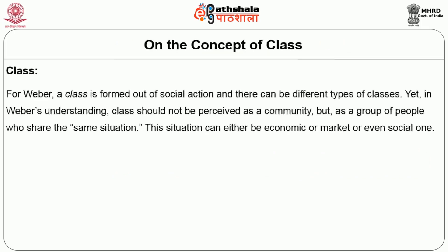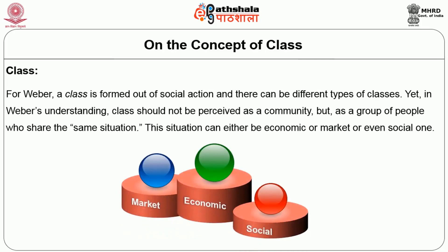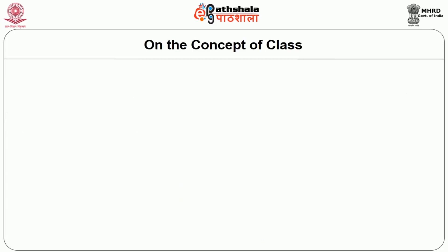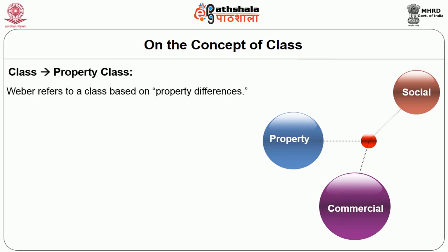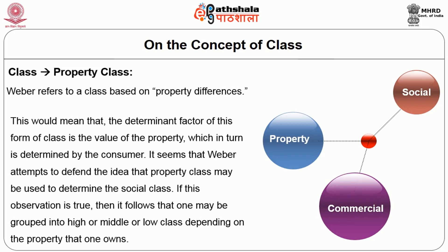On the concept of class, for Weber a class is formed out of social action and there can be different types of classes. Yet in Weber's understanding, class should not be perceived as a community, but as a group of people who share the same situation — which can be economic, market or social. Moreover, Weber distinguishes between three types of classes: property, commercial and social. By property class, Weber refers to a class based on property differences, where the determinant factor is the value of the property, which in turn is determined by the consumer. Weber attempts to defend the idea that property class may be used to determine social class, such that one may be grouped into high, middle or low class depending on the property one owns.